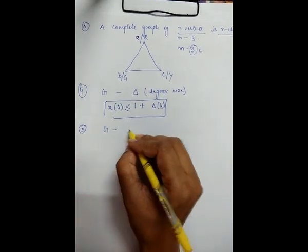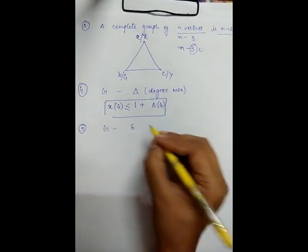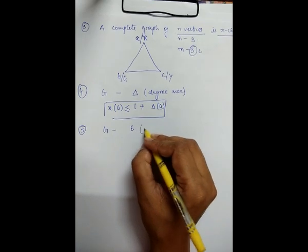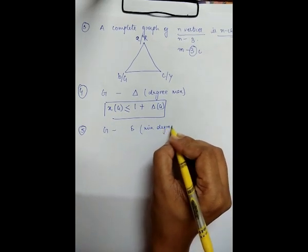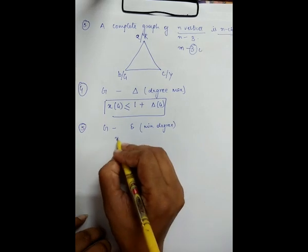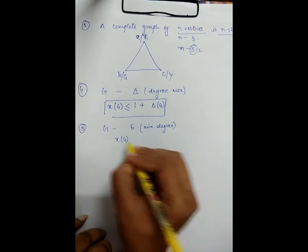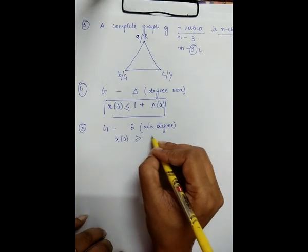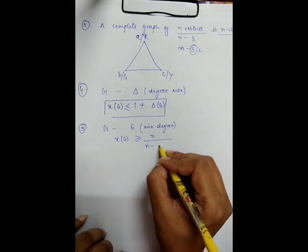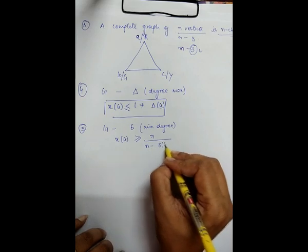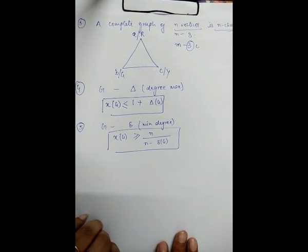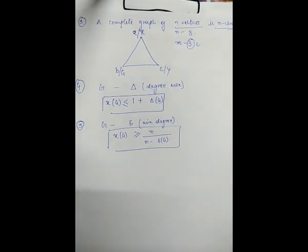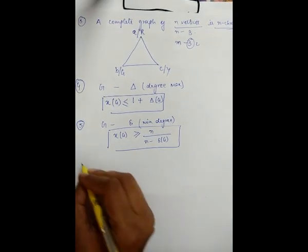The next observation: for any graph G with a minimum degree represented by ρ (rho), the chromatic number satisfies χ(G) ≥ n / (n − ρ(G)), where n is the number of vertices. This is how we calculate the chromatic number given the condition of minimum degree.